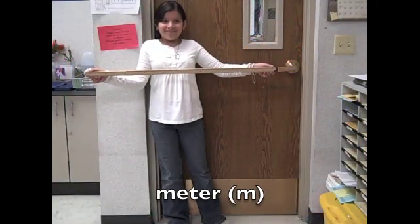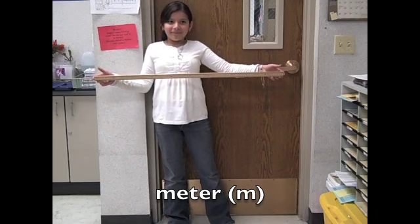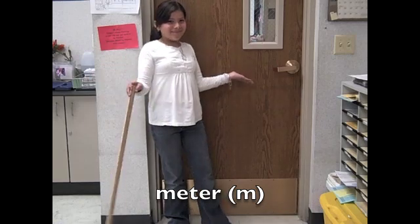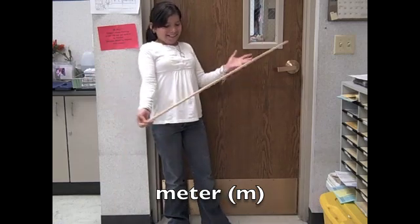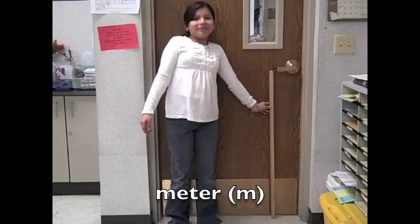The basic unit of measuring length in the metric system is the meter. This ruler measures a meter. Find a door near you. The doorknob or handle is probably about one meter above the floor.